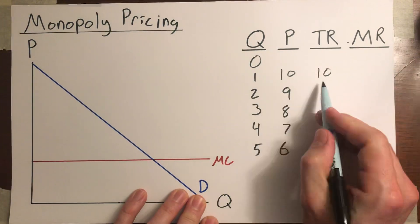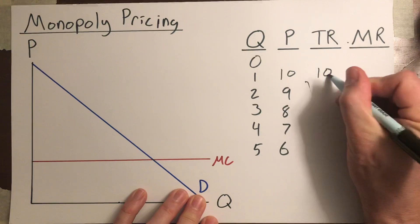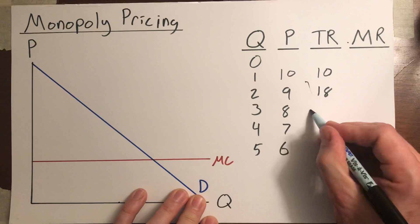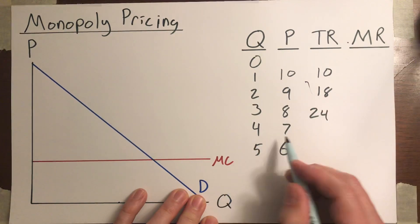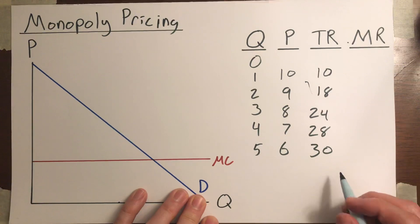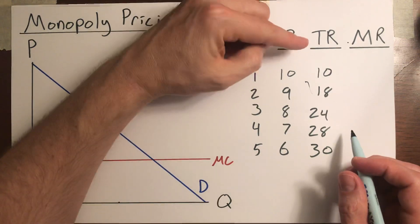Total revenue would be $10 if they sell one unit. If they sell two units, two times nine is 18. Three times eight is 24. Four times seven is 28. Five times six is 30.